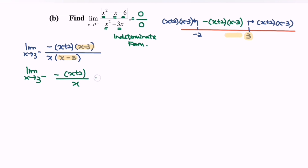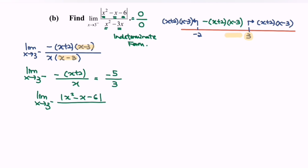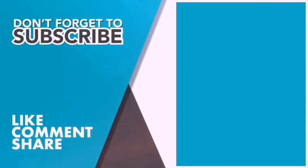Substituting the value 3, we get negative 5 over 3. So the limit when x approaching 3 from the left for the function modulus of (x² minus x minus 6) over (x² minus 3x) equals negative 5 over 3. If you are new here, kindly consider subscribing to this channel and share this video with your friends. Thank you so much for watching. Bye!